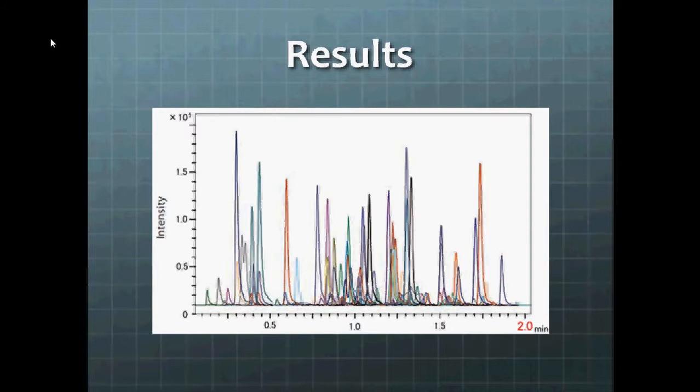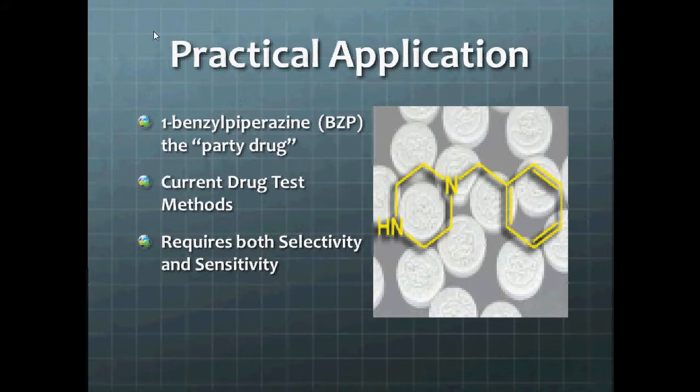Now let's look at a real life study that was done with a triple quadrupole. In New Zealand they have a problem with a drug that used to be legal but is now illegal: 1-benzylpiperazine or BZP, a.k.a. the party drug. This drug gives effects to the user very similar to ecstasy or amphetamine and is also addictive, and that's why it's now illegal. But now that it is illegal, they need a way to test for the drug.